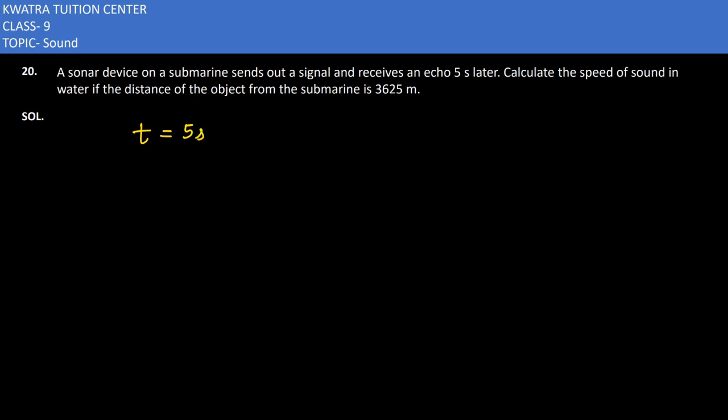The second one, they asked here, distance of the object from the submarine is, what is it, 3625 meter. Okay, distance of object from submarine, 3625.